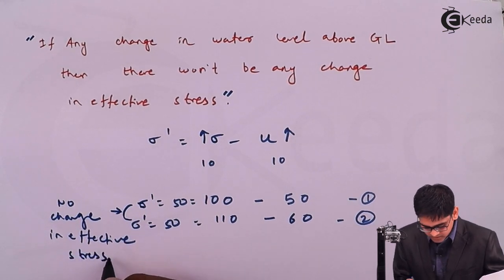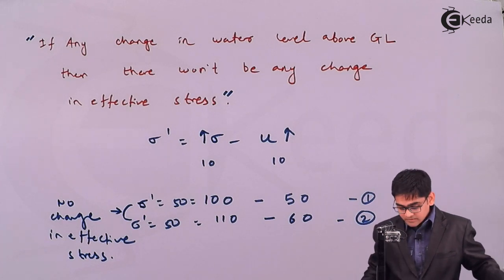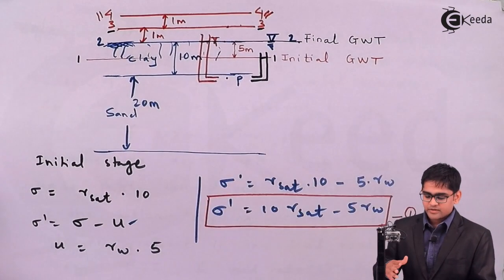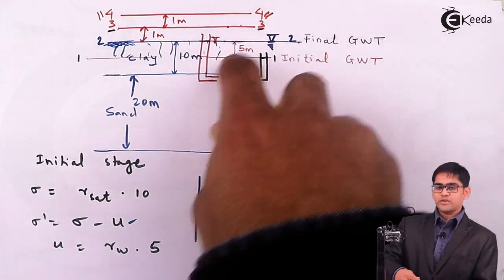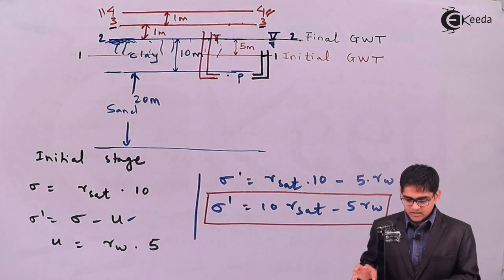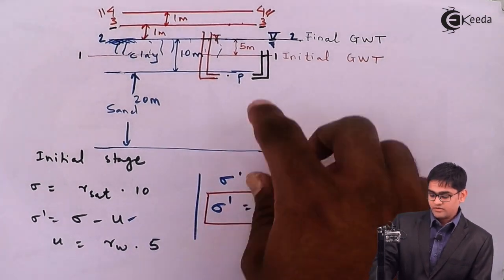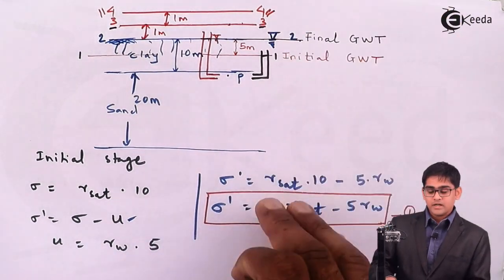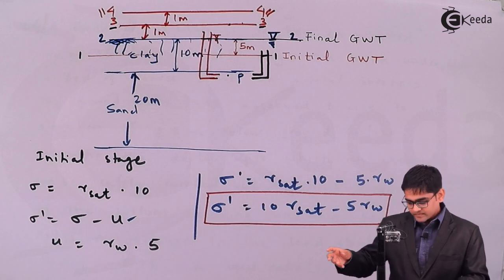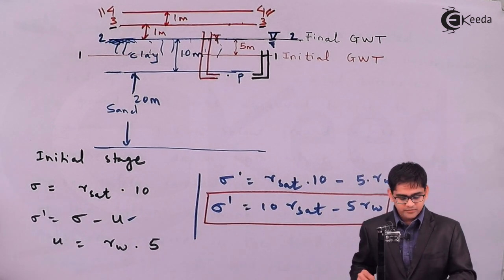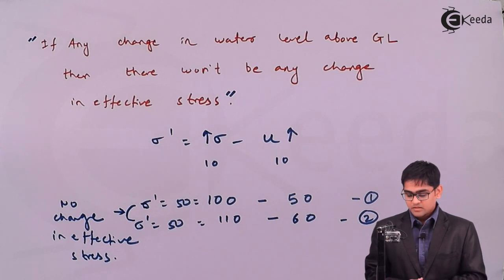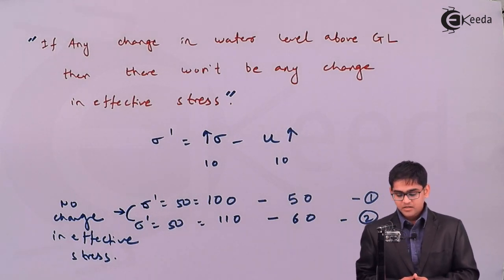Remember this is very important, both for university level examinations and competitive examinations. If you increase or decrease the water level above ground level, the effective stress within the soil will not change. However, if there is any increase or decrease in the groundwater table below the natural ground level, then there will be a corresponding increase or decrease in effective stress. This concludes problem number 3 in the chapter of capillarity and effective stress. Thank you.